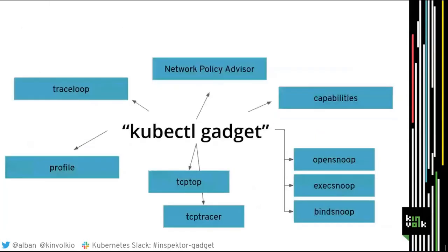Inspector Gadget has many gadgets for different use cases. TraceLoop is for seeing what happened when your pod crashed, inspecting the last system calls it made. There is a Network Policy Advisor that helps you see what network traffic your pods produce and helps you write network policies in a more automated way. Capabilities is another gadget that shows what capabilities are exercised by your pods, helping you write pod security policies. There are also OpenSnoop, ExecSnoop, and BindSnoop gadgets.